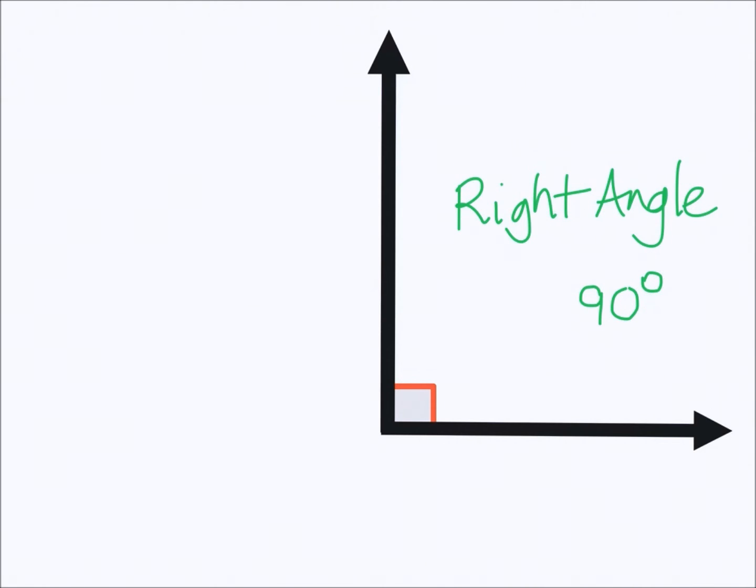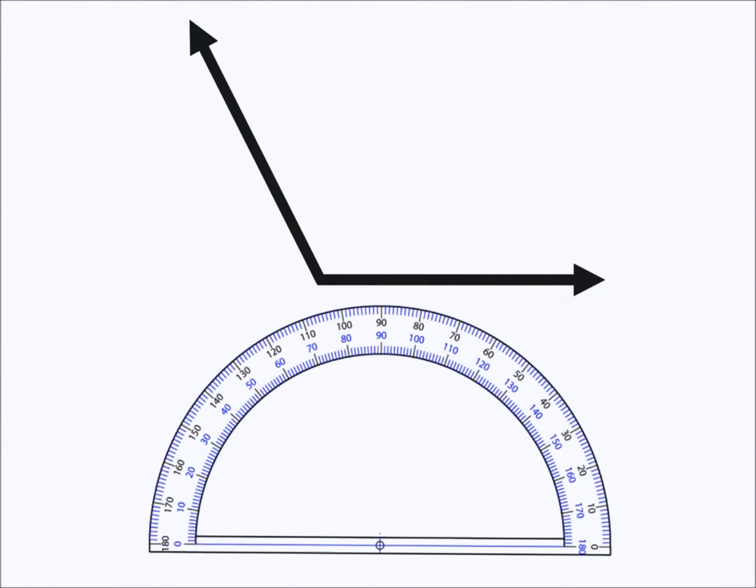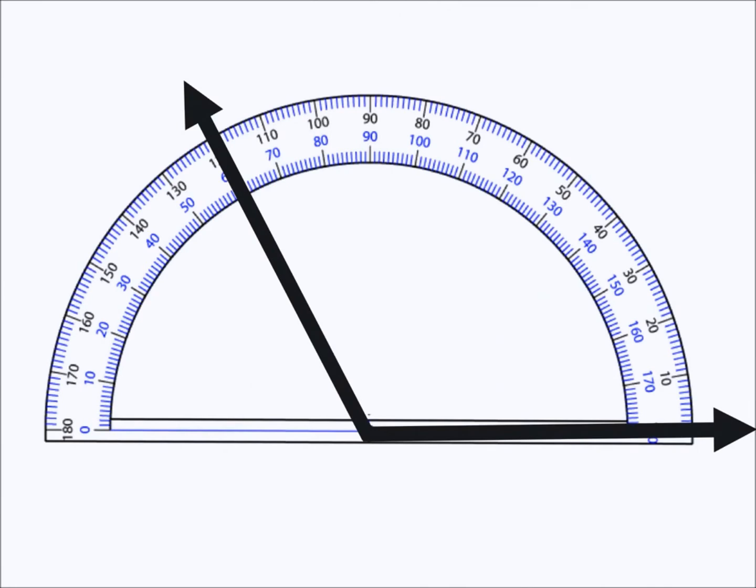Here we have the second angle we drew and as we can see it opens to the right again. So we are going to use the right hand side of the protractor to measure it. We have the angle arranged on the protractor with its vertex on the vertex of the protractor and the base is lined up, so we will start to measure now.